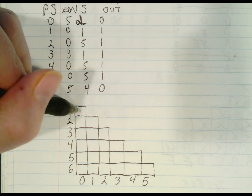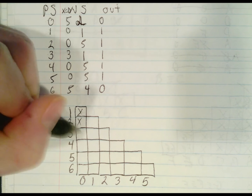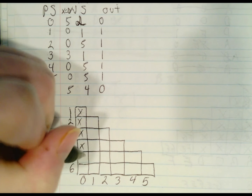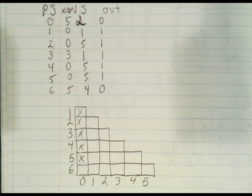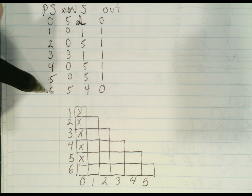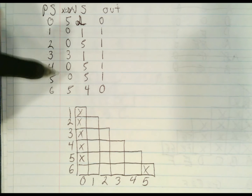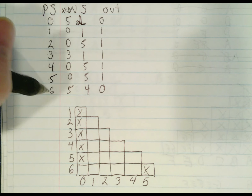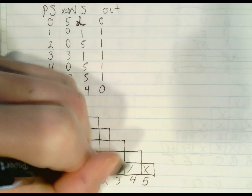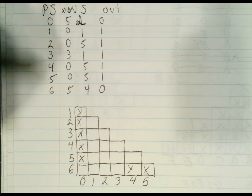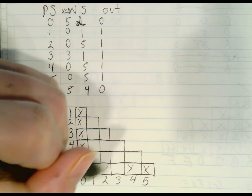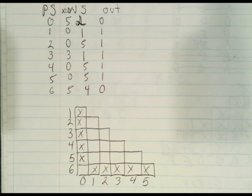So row zero must be different from one, two, three, four, and five. Moreover, we can see that row five must be different from row six. Row four must be different from row six. In fact, everything up to and including row one must be different from row six. So we get trivial reductions right away.